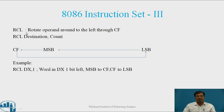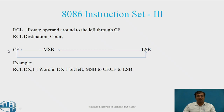Next is RCL — rotate operand around to the left through carry flag. The syntax is: RCL destination, count. The LSB content moves left position by position; the MSB content is copied to CF, and then CF is copied into LSB. This is how the rotate RCL works.